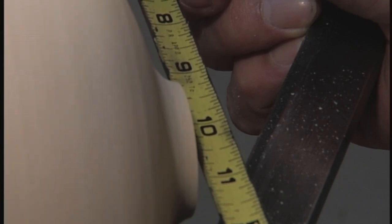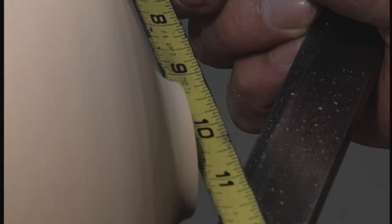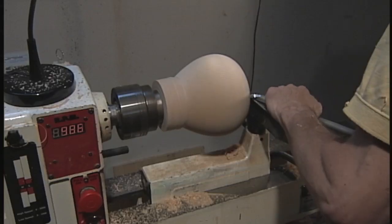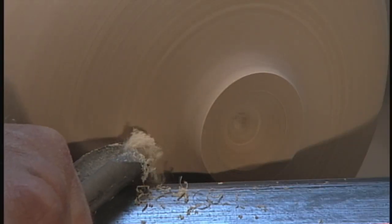I'm going to be hollowing with a 5/8 inch tool so what I like to do is have my opening right around an inch. So we'll go ahead and clean this up a little bit. We're just taking some light cuts.